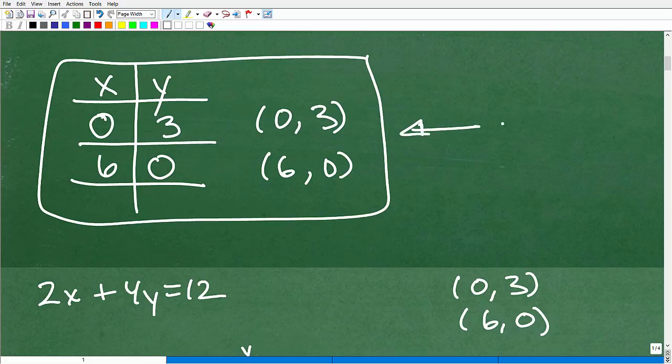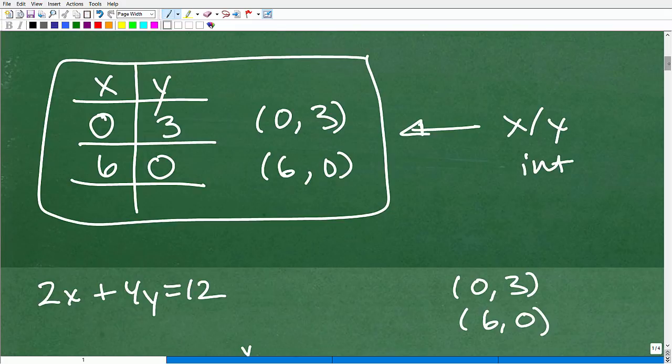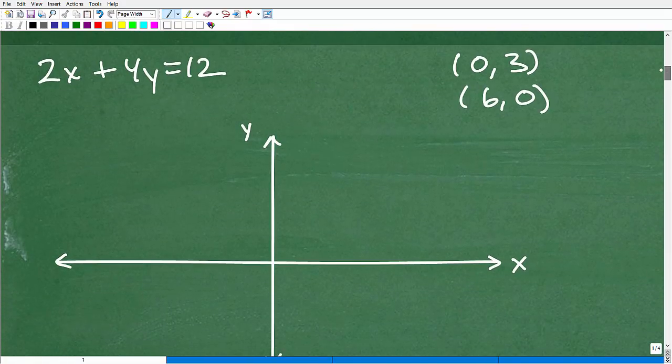All right, so again, zero three and six zero, we found using our table values. This is referred to as finding the x and y intercepts. You're going to see here in a second why they're referred to as such. So let's go down here and plot these.